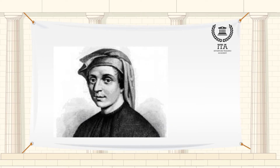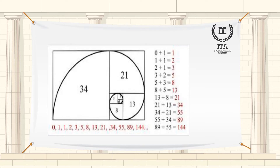In the 12th century, when Leonardo Fibonacci, an Italian mathematician, created his numerical sequence, there was no such thing as the financial markets, and these numbers were based on how rabbits multiplied.